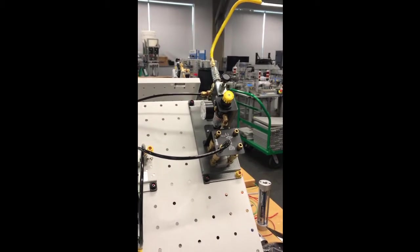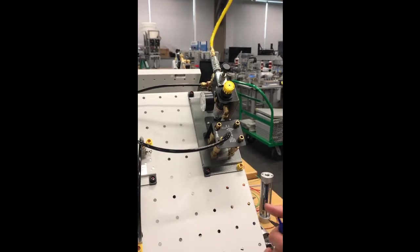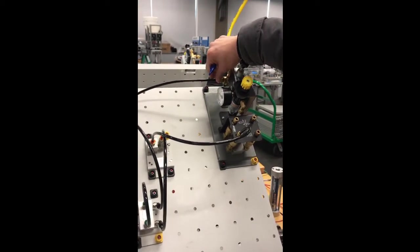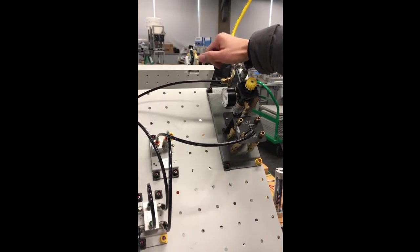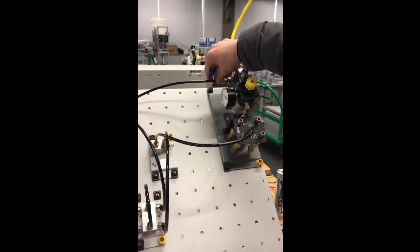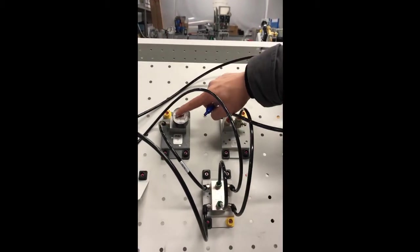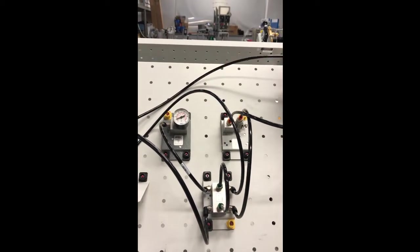We did a test earlier where one of our peers held the return line with his finger, cutting off all the flow that's returning. But in response, the pressure gauge actually just skyrocketed a bit.